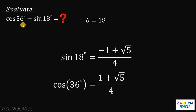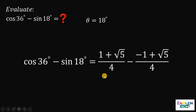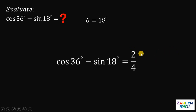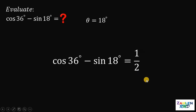Our goal is to find cosine 36 degrees minus sine of 18 degrees. This is 1 plus square root of 5 over 4, minus negative 1 plus square root of 5 over 4. Since they have the same denominator, we combine: 1 plus square root of 5 plus 1 minus square root of 5, all over 4. The square root of 5 terms cancel, and 1 plus 1 is 2, so 2 over 4 equals 1 half.